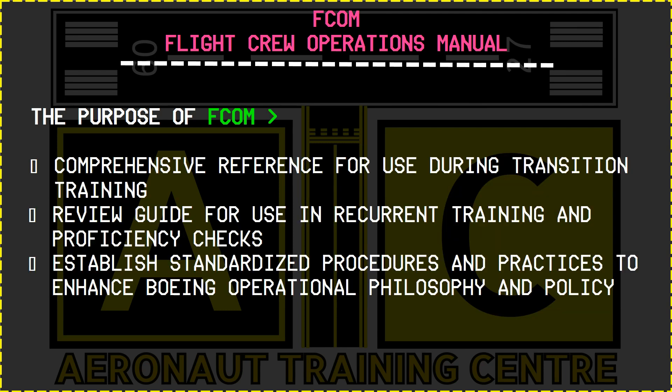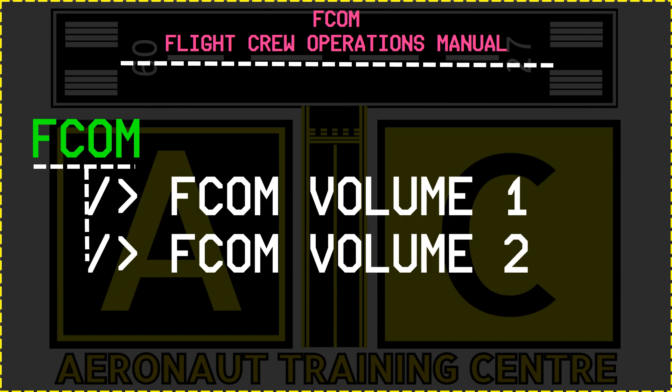FCOM also serves as a comprehensive reference for use during transition training for the 737 airplane; as a review guide for use in recurrent training and proficiency checks; to provide necessary operational data from the FAA-approved Airplane Flight Manual (AFM) to ensure that legal requirements are satisfied; and to establish standardized procedures and practices to enhance Boeing operational philosophy and policy. FCOM is divided into two volumes: FCOM Volume 1 and FCOM Volume 2.